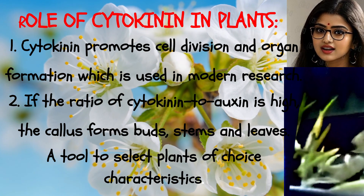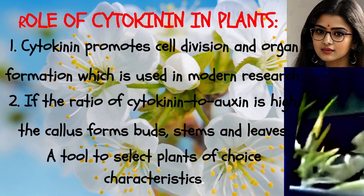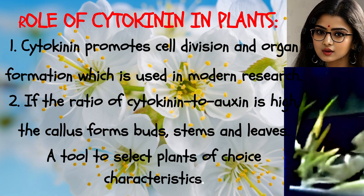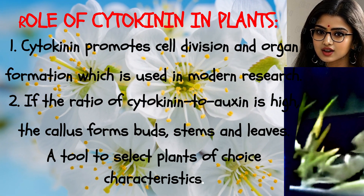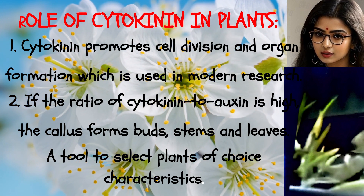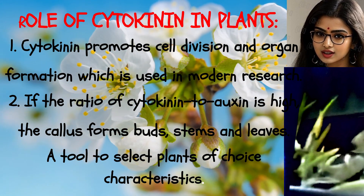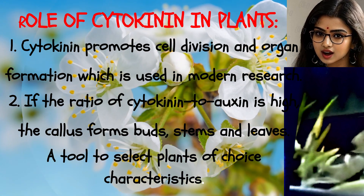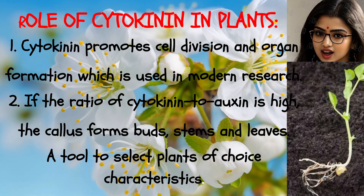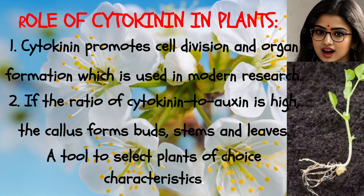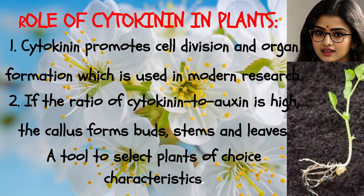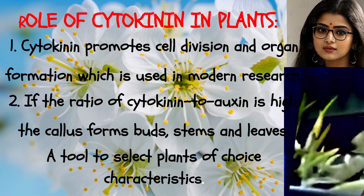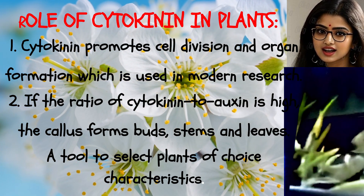Role of cytokinin in plants. One: cytokinin promotes cell division and organ formation, which is used in modern research. Two: if the ratio of cytokinin to auxin is high, the callus forms buds, stems, and leaves — a tool to select plants of desired characteristics.